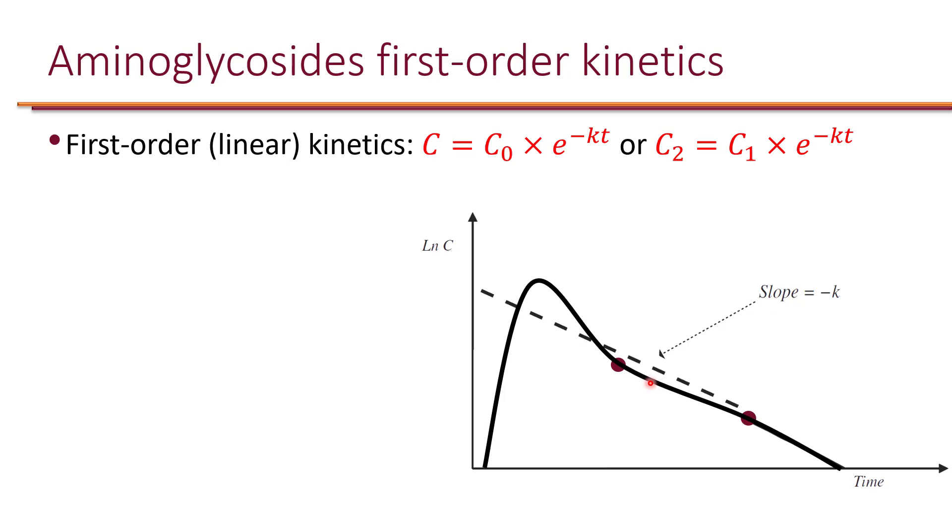You can use the famous equation C equals C naught times e to the negative kt, which basically means that your final concentration equals your initial concentration times e to the negative kt, and the T is the time between the initial concentration and the final concentration. Another way of saying this is that C2 equals C1 times e to the negative kt.